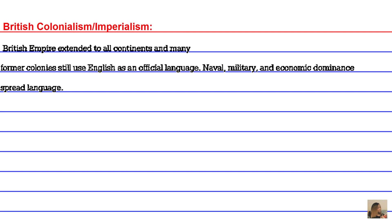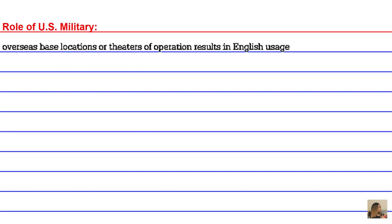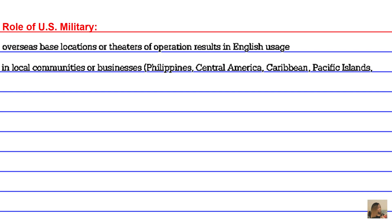The U.S. military had a role in the worldwide spread of English. Overseas-based locations or theaters of operation resulted in English usage in local communities and businesses, such as the Philippines, Central America, the Caribbean, Pacific Islands, Europe, the Korean Peninsula, and Japan.